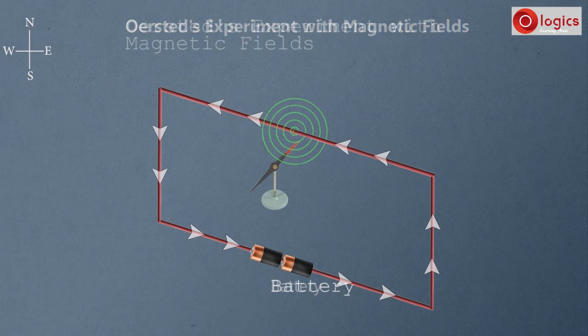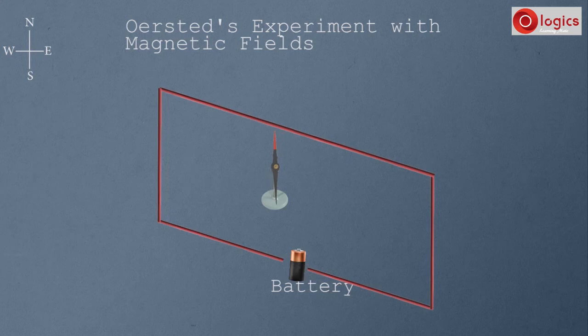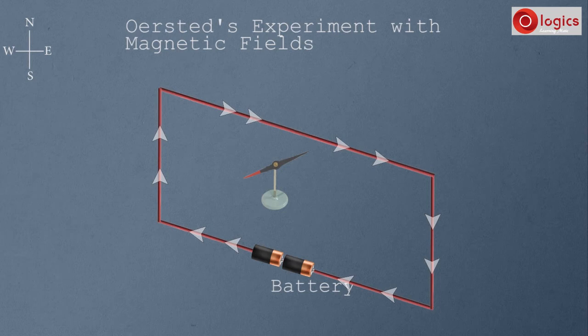Observe — the current flow is in this direction. Now I reverse the direction of current flow. Observe that the magnetic needle's north now deflects towards west. Again, if the current is increased, the deflection of the needle towards the west direction also increases.